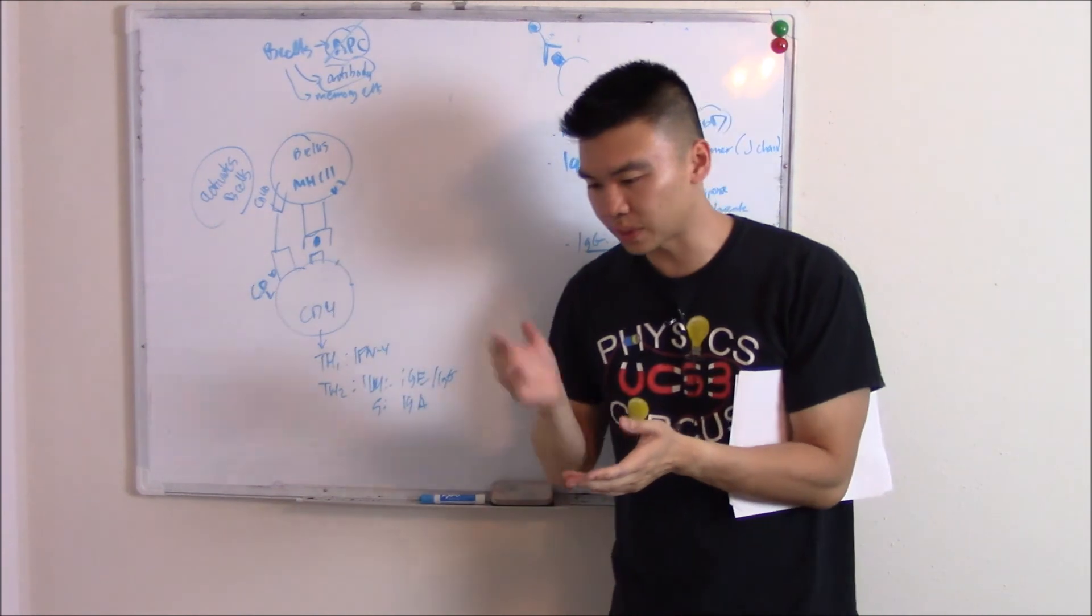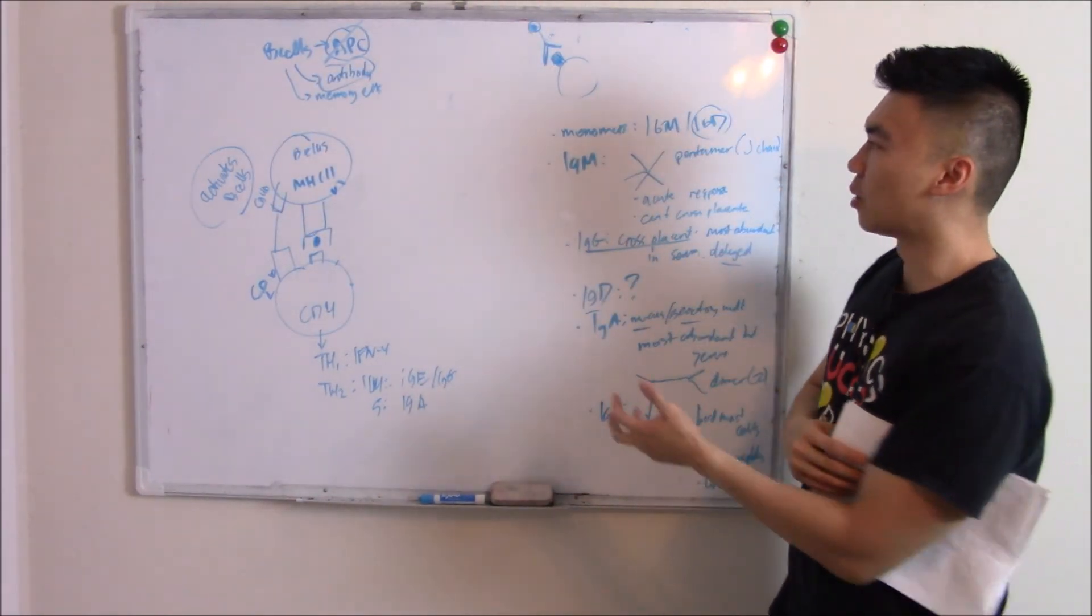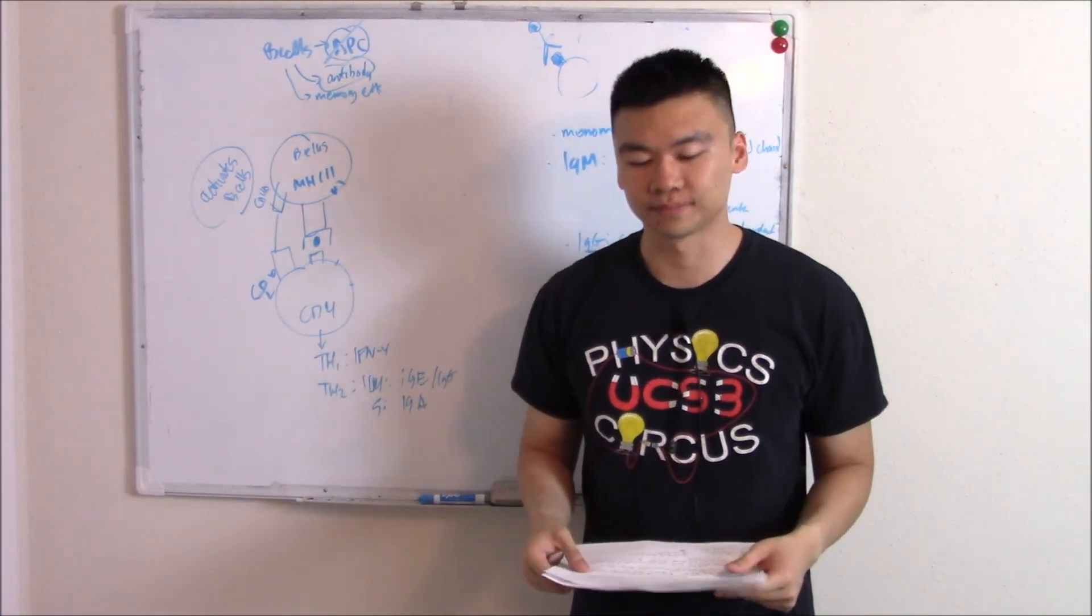So that's all you need to know about B cells, how they're activated, what they do, what they create, and then a little bit of anatomy on antibodies. Hope you enjoyed this video. Thanks.